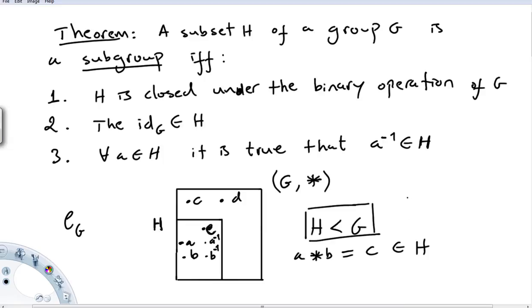An improper subgroup of G will be the set containing just the identity element E, and the empty set. Those are the improper subgroups of a group. So the H satisfying the three conditions will be a proper subgroup of G.